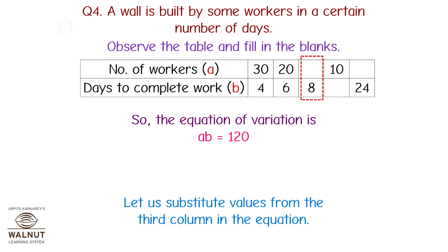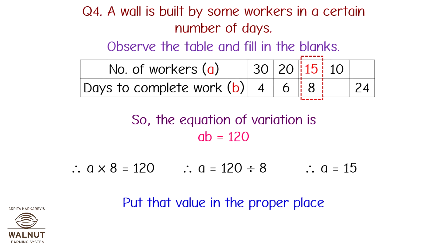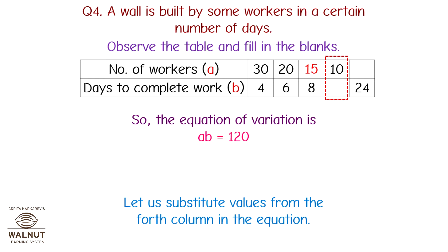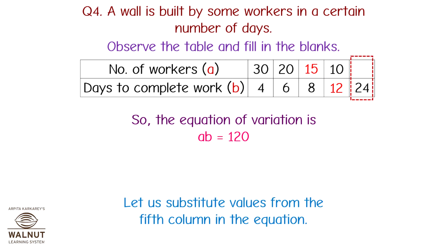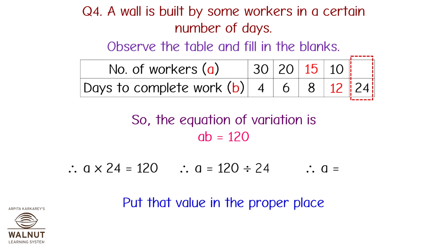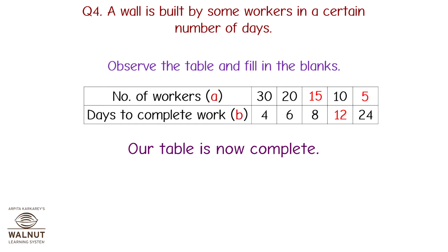Substituting from the third column: A × 8 = 120, so A = 120 ÷ 8 = 15. Substituting from the fourth column: A × 24 = 120, so A = 120 ÷ 24 = 5. These values are placed in the proper positions and the table is now complete.